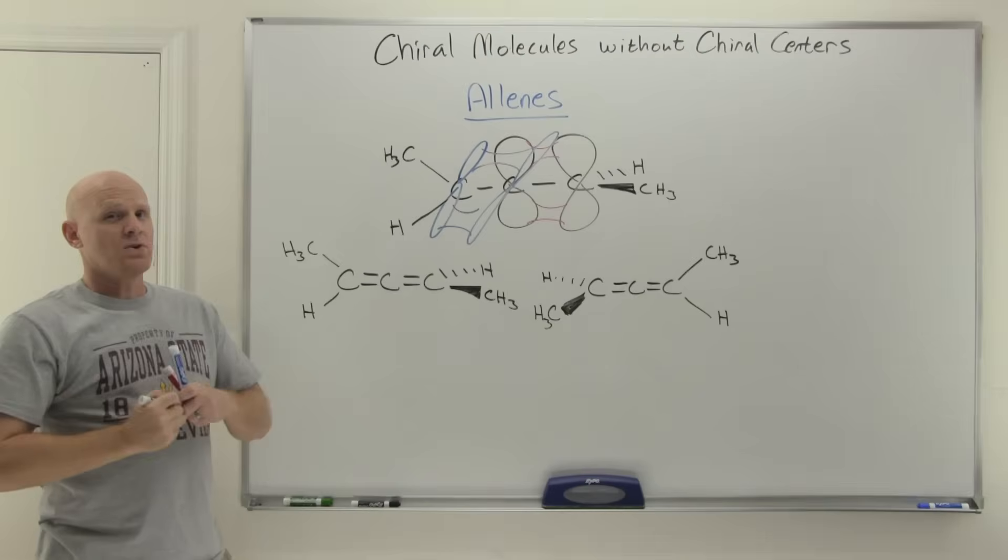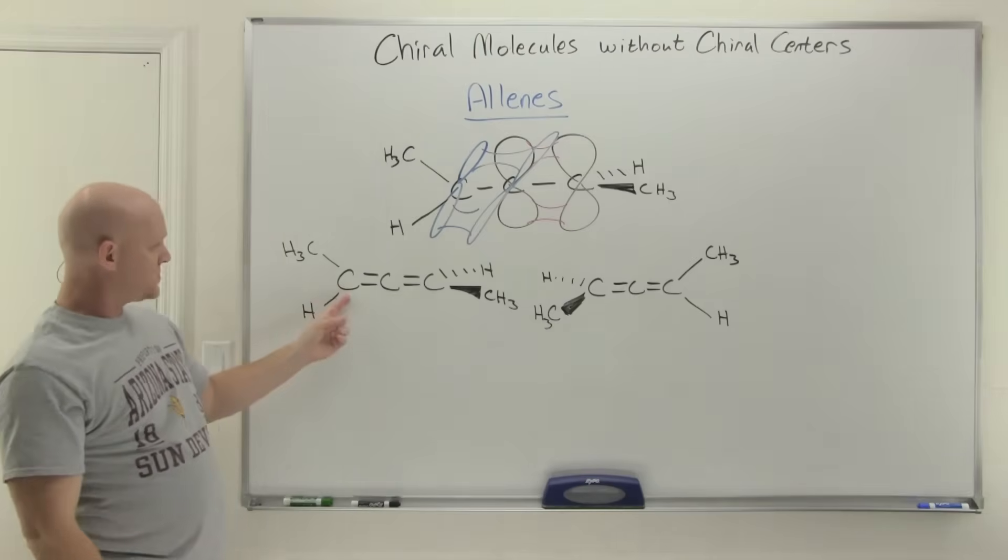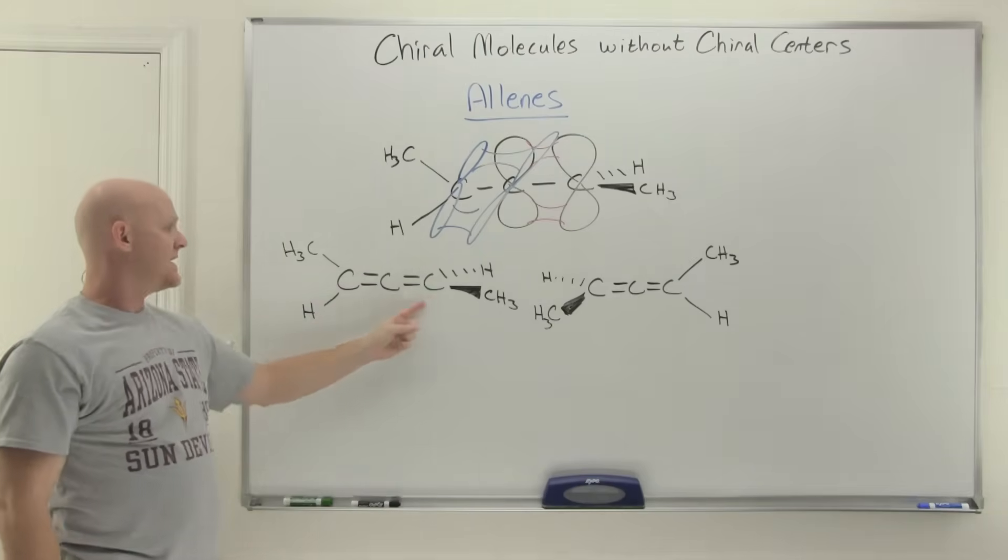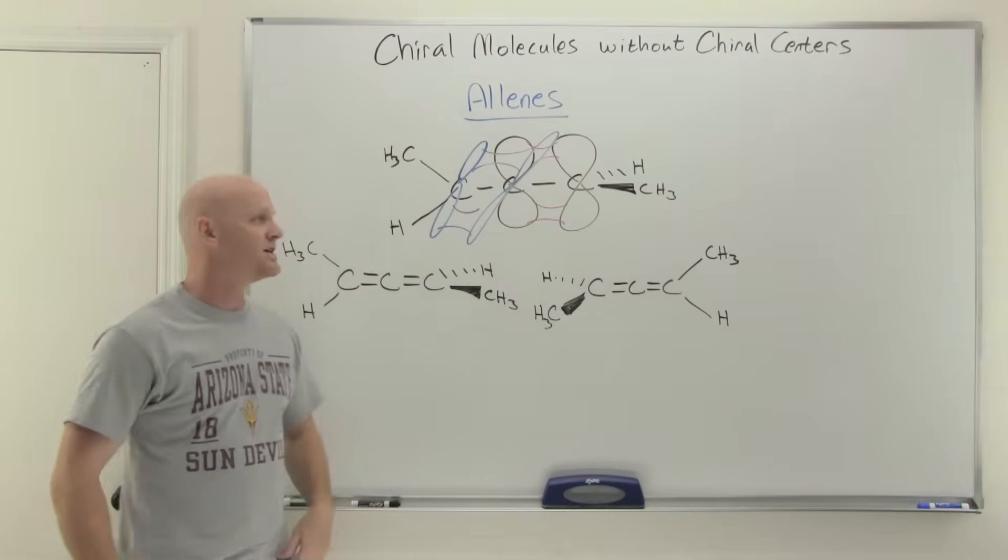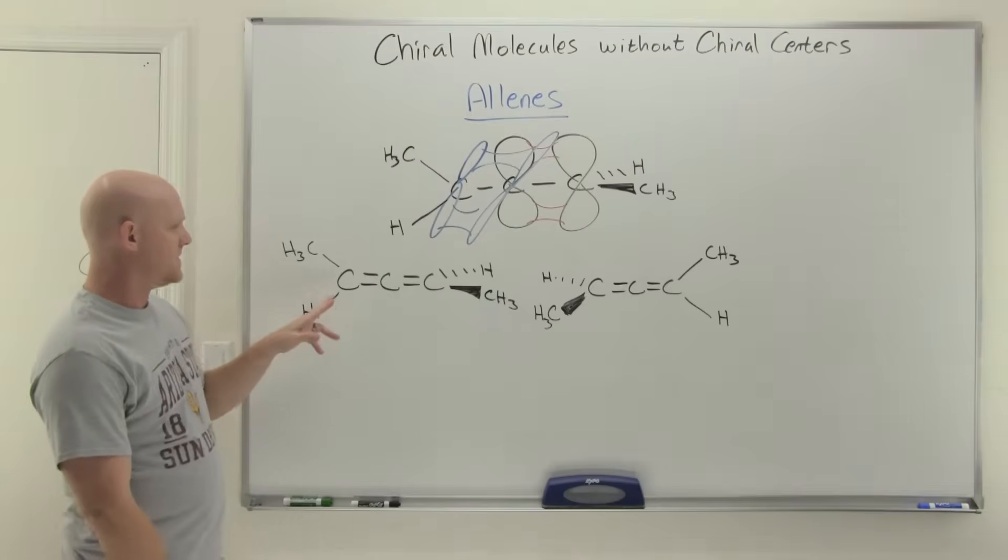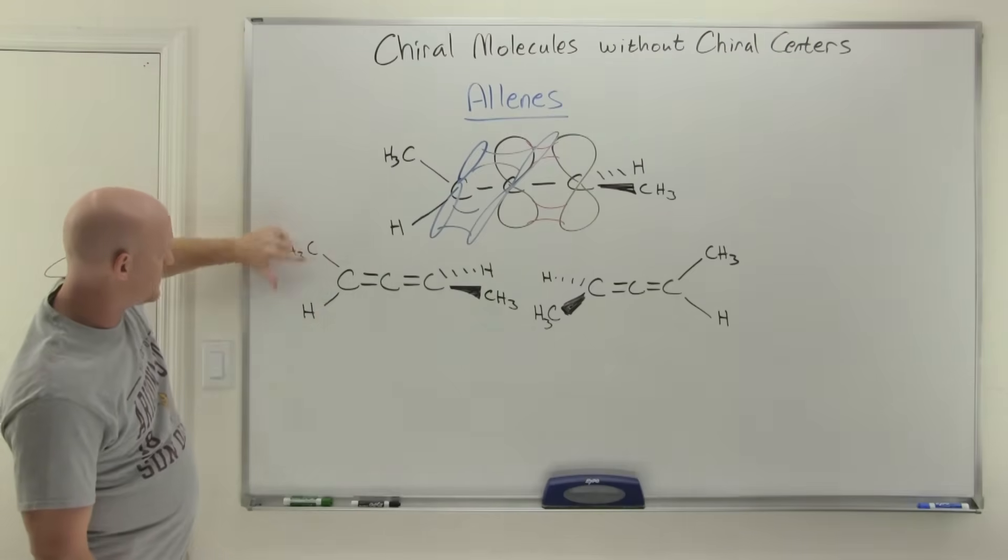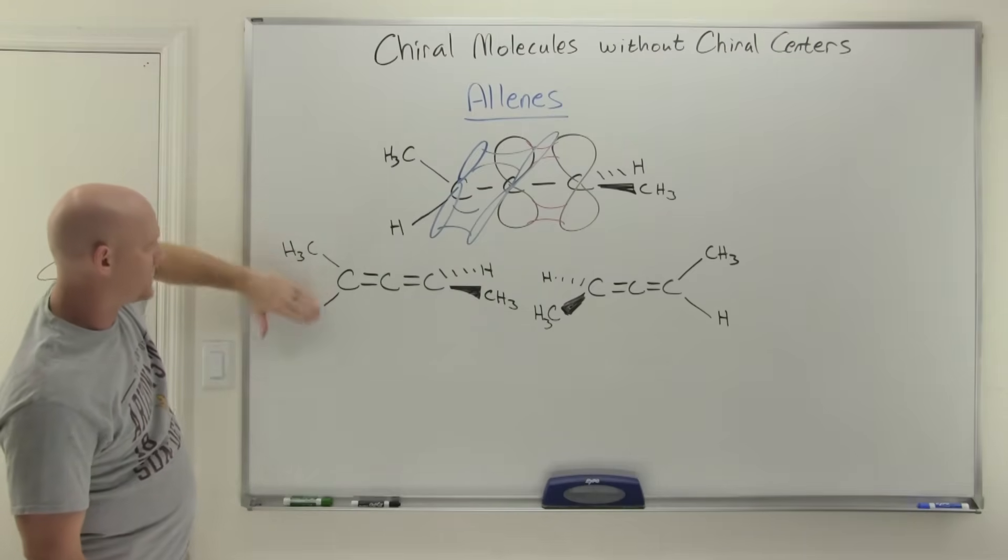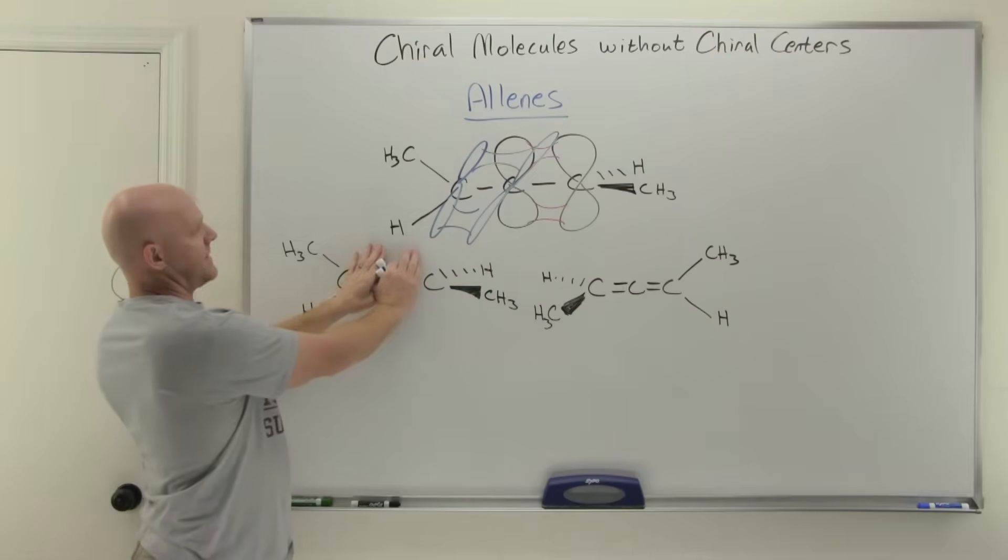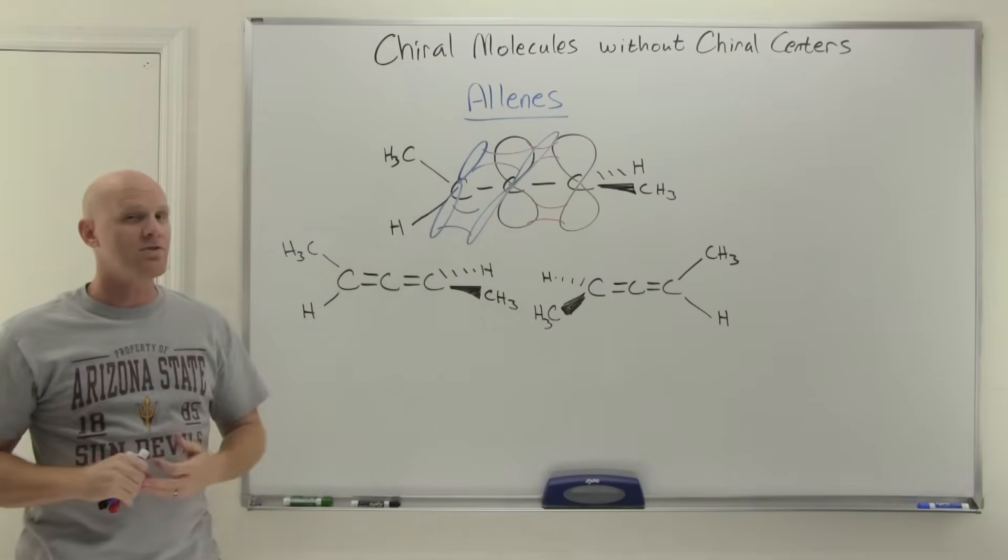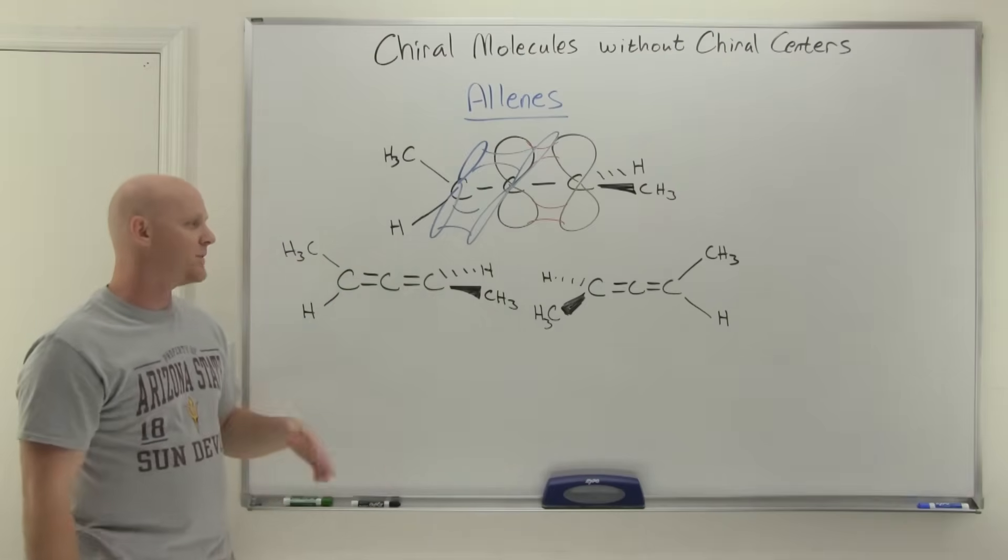And so as a result here, so this is an sp2 hybridized carbon, sp hybridized carbon, sp2 hybridized carbon. And so none of these are sp3. So none of them can be a chiral center by definition. However, if you look at this though, with these two groups being in this vertical plane, the plane of the board and these two being in the horizontal plane, if you kind of just cover up the middle for a second, it kind of resembles the tetrahedral shape. And as a result, that's what actually allows it to potentially be chiral.